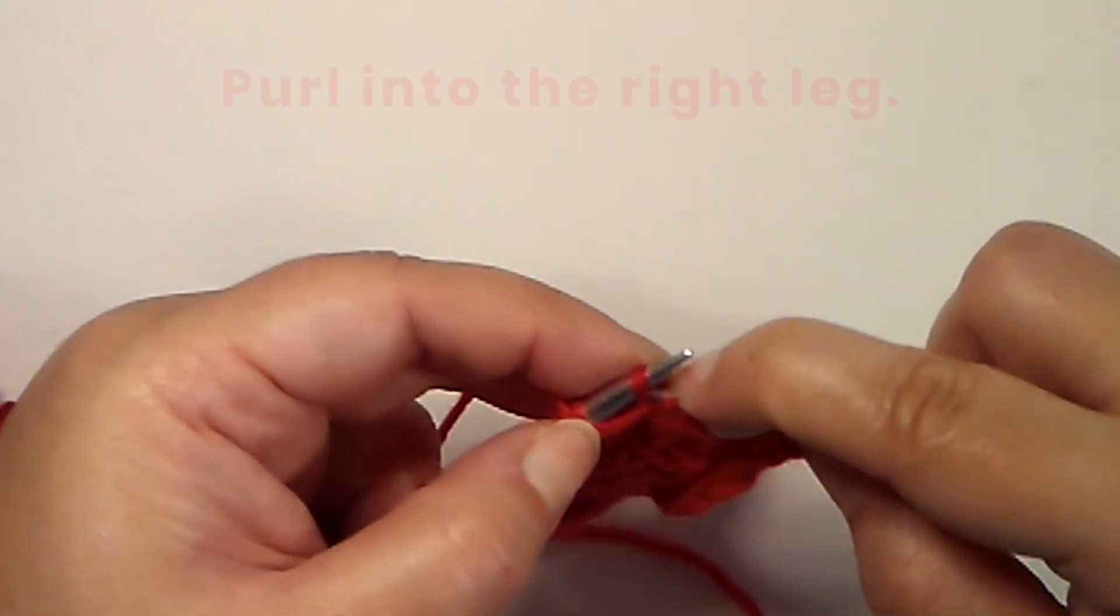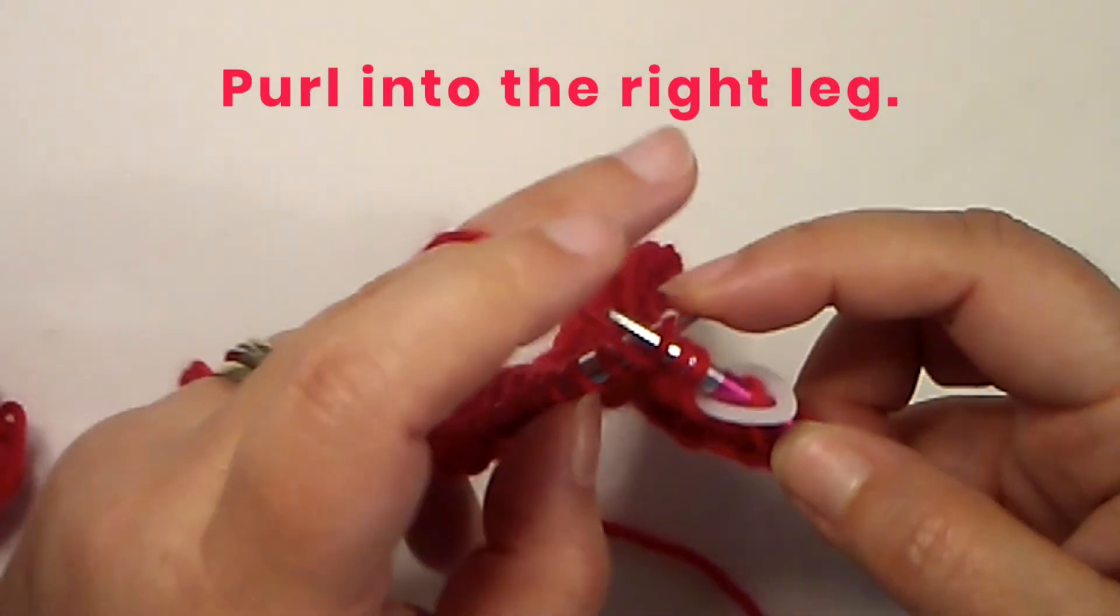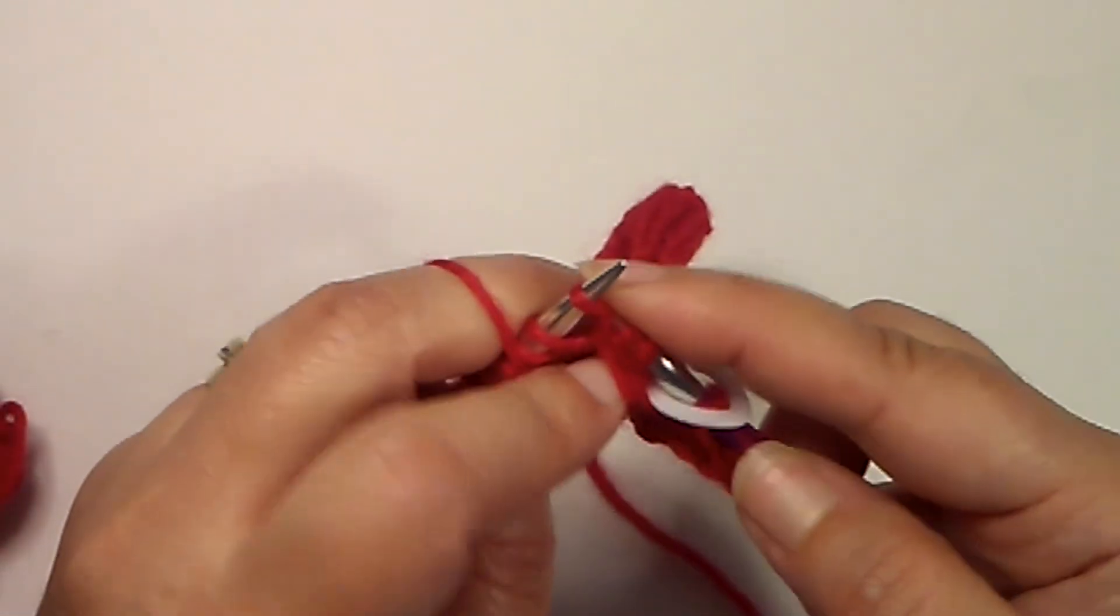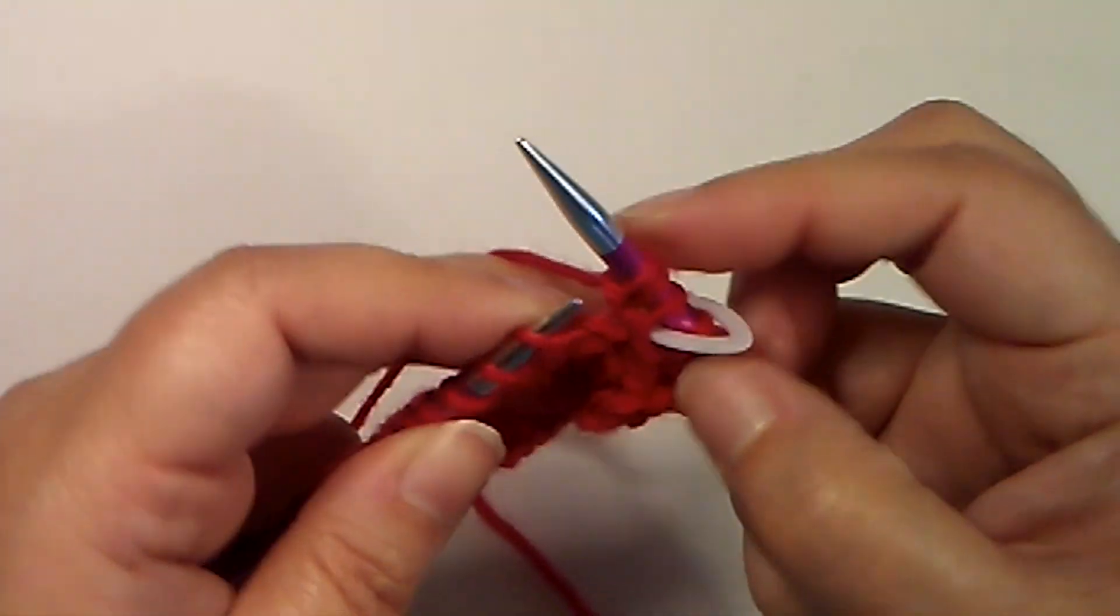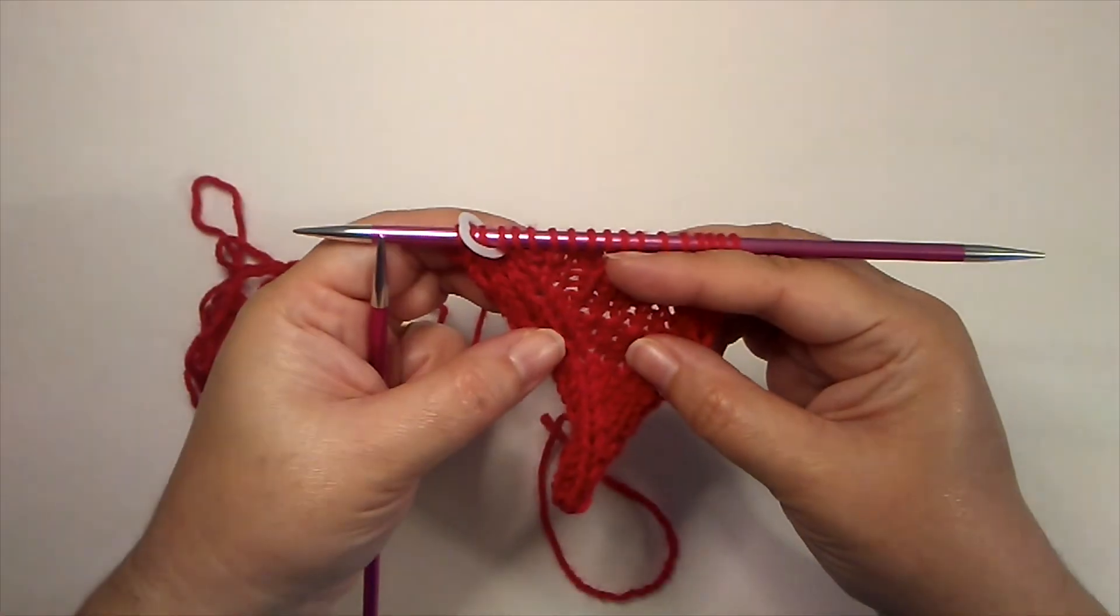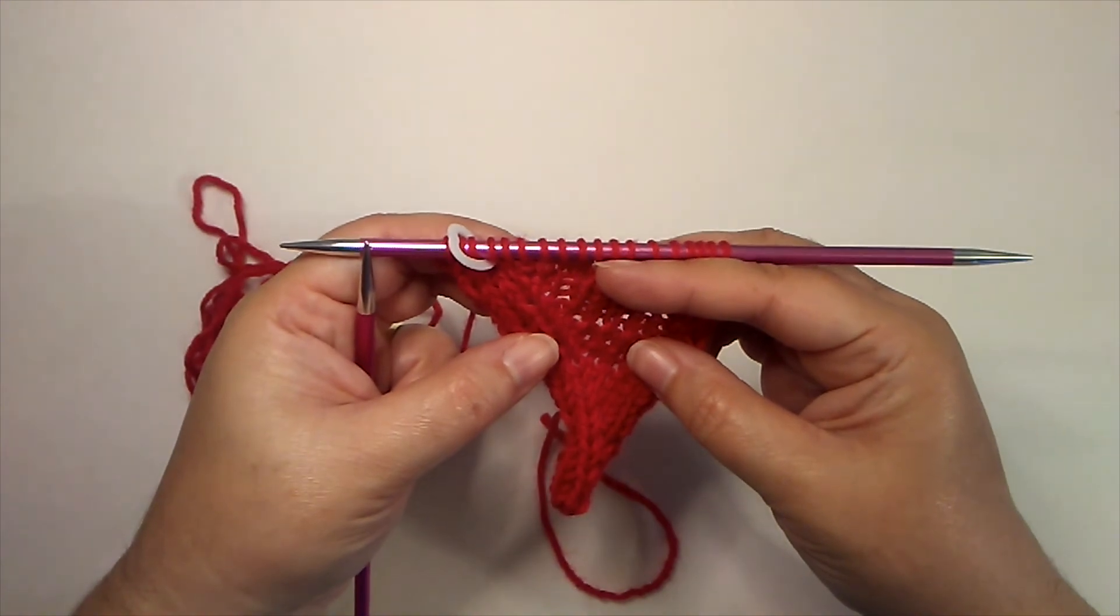So I insert and I knit into this left—purl into this left leg—and that gives me two stitches. So that is a purl front, back, front.